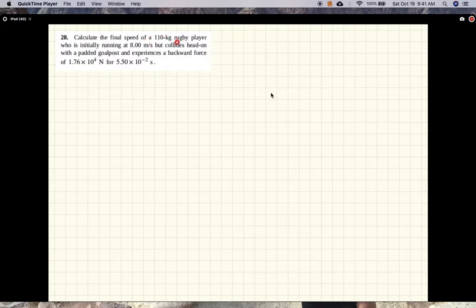Calculate the final speed of a 100 kg rugby player who is initially running at 8 meters per second but collides head-on with the padded goal post and experiences a backward force of